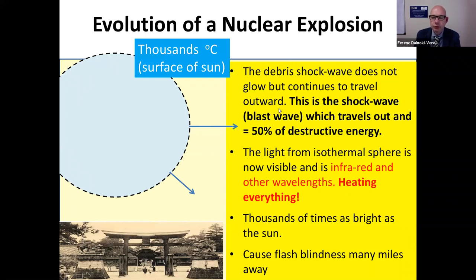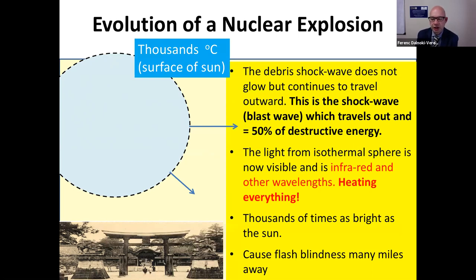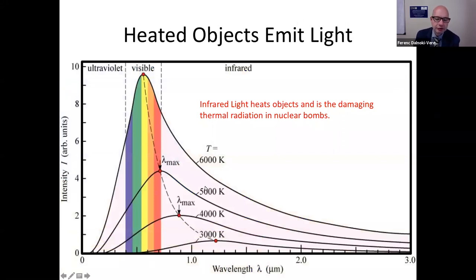So there are really two pulses: the first from the debris sphere at about 1% of energy, and the second from the isothermal sphere at 99%. This technique is actually used to detect nuclear explosions from space — since only a nuclear explosion produces these two distinct pulses, one at about a millisecond and one at about a hundred milliseconds later. These detectors were called bangometers. The bomb emits all kinds of wavelengths of light — visible, infrared, and ultraviolet — that can cause damage to the environment.